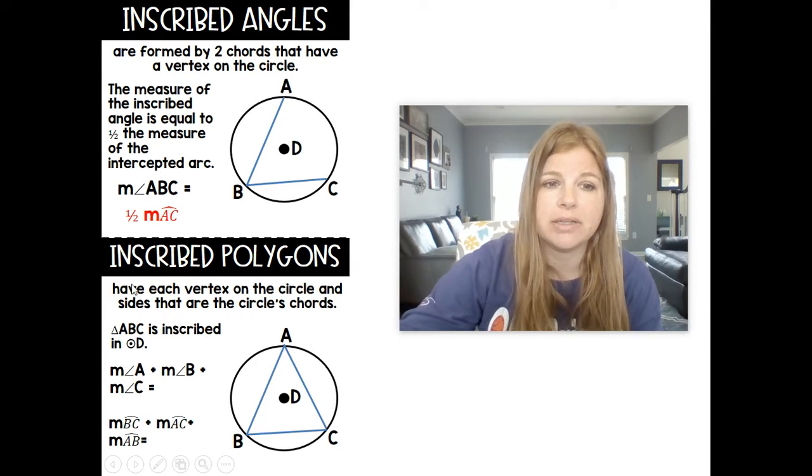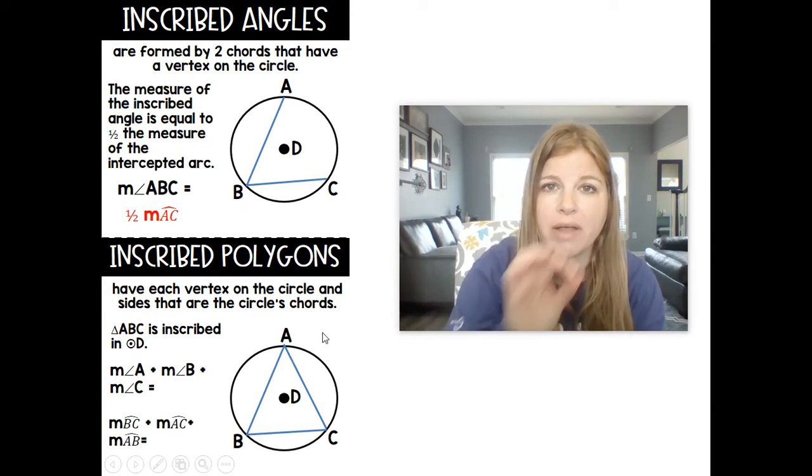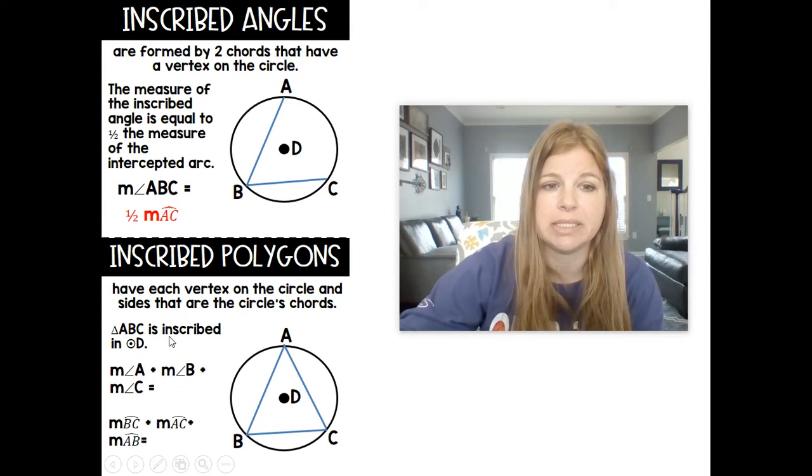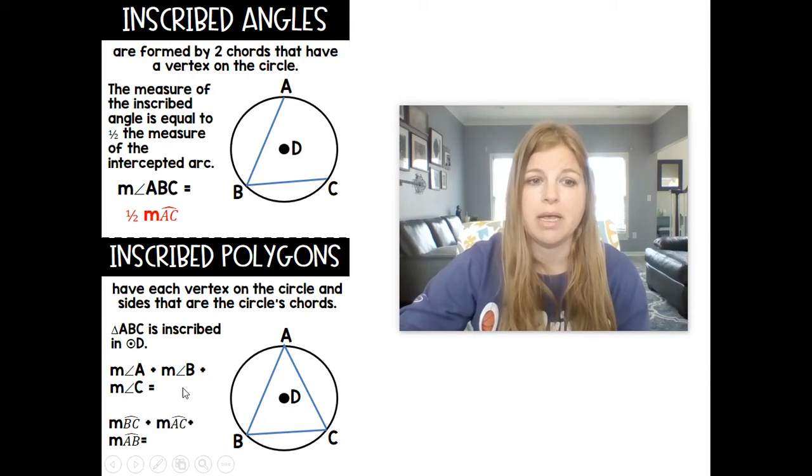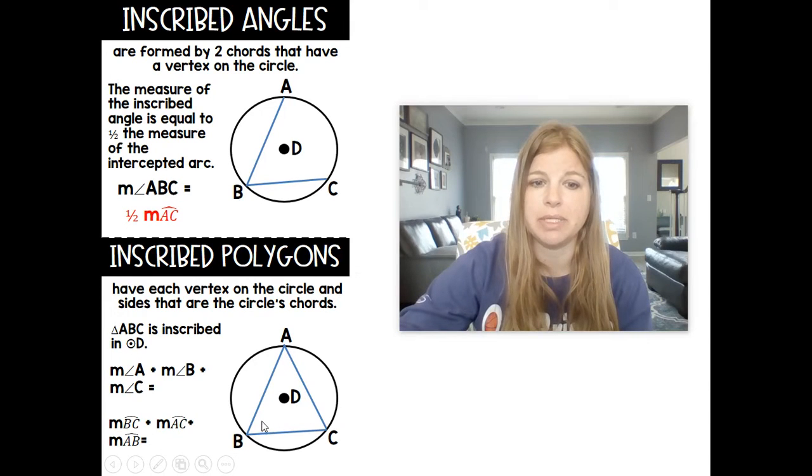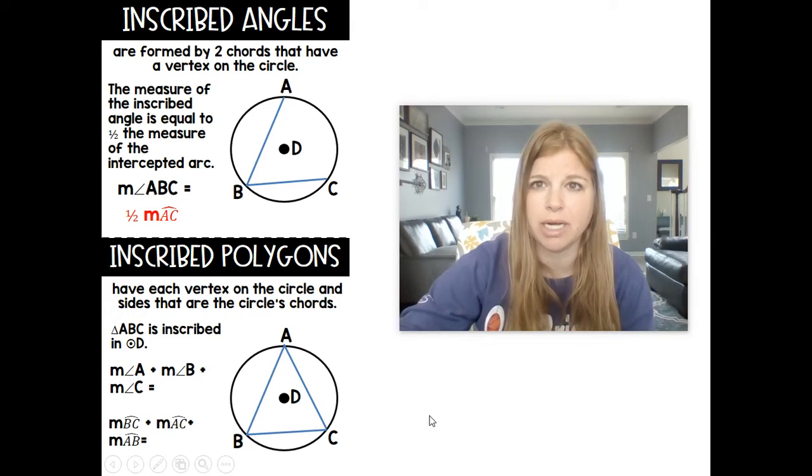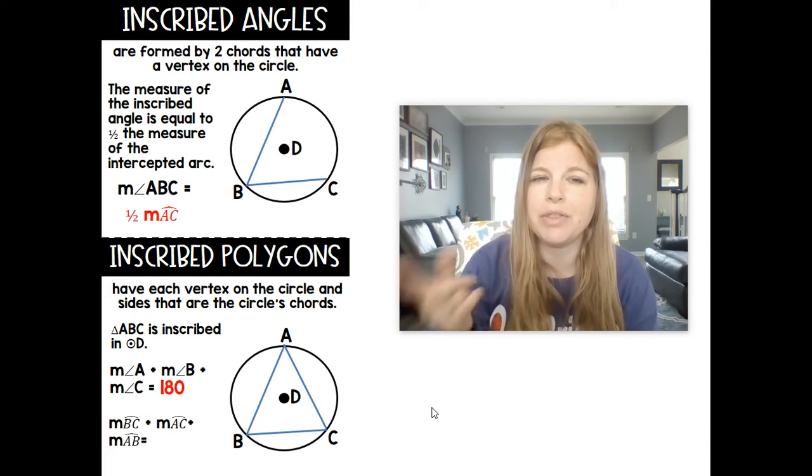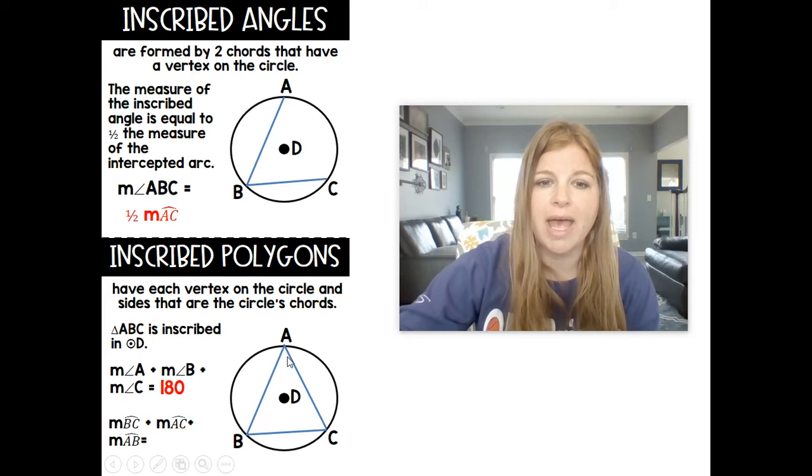Inscribed polygons have each vertex on the circle. Triangle ABC is inscribed in circle D. The measure of angle A plus angle B plus angle C equals 180. But think about inscribed angles: if angle A is half of arc BC, and angle B is half of arc AC, and the measure of angle A is half the arc BC, and angle B is half arc AC...